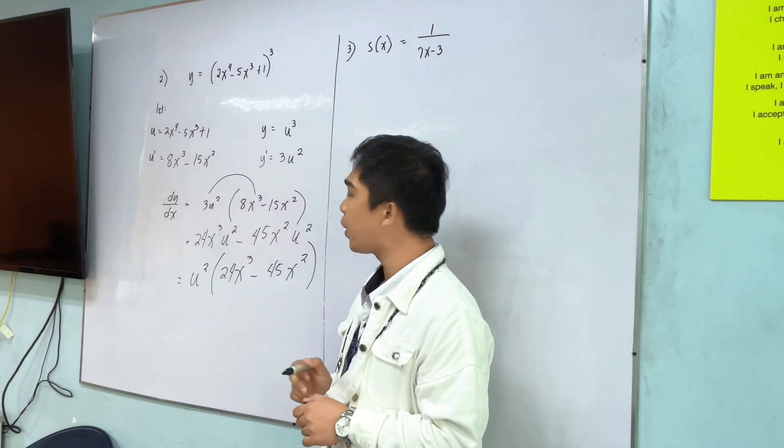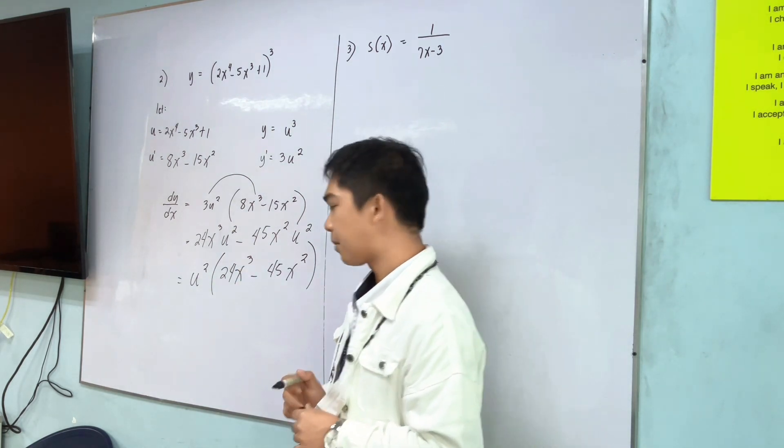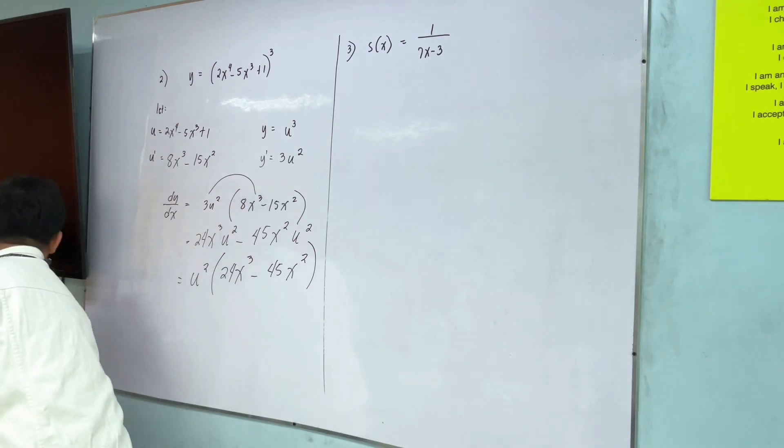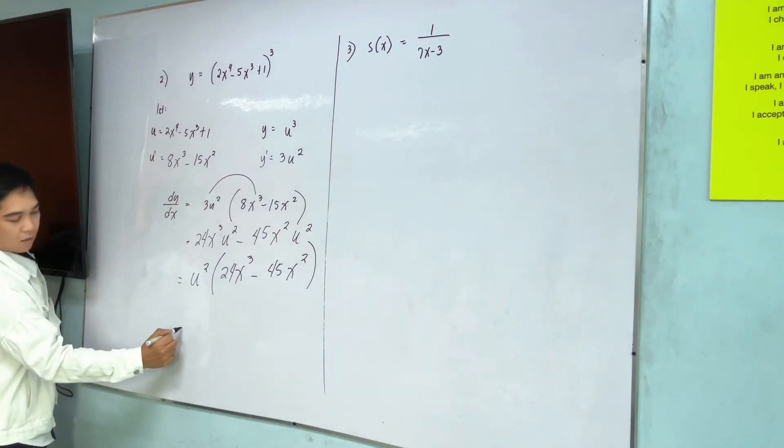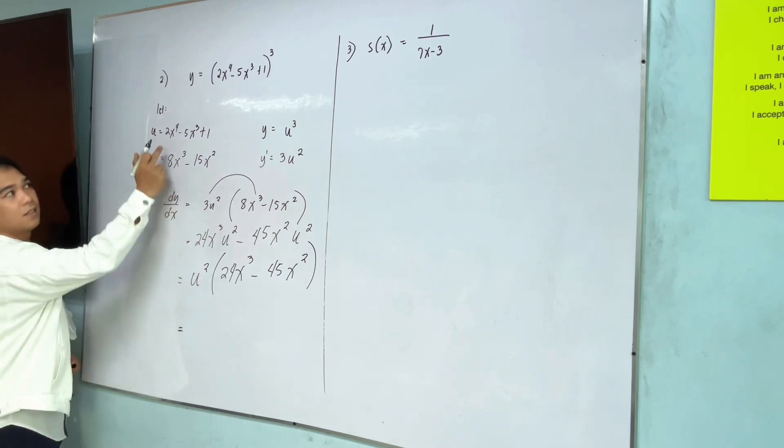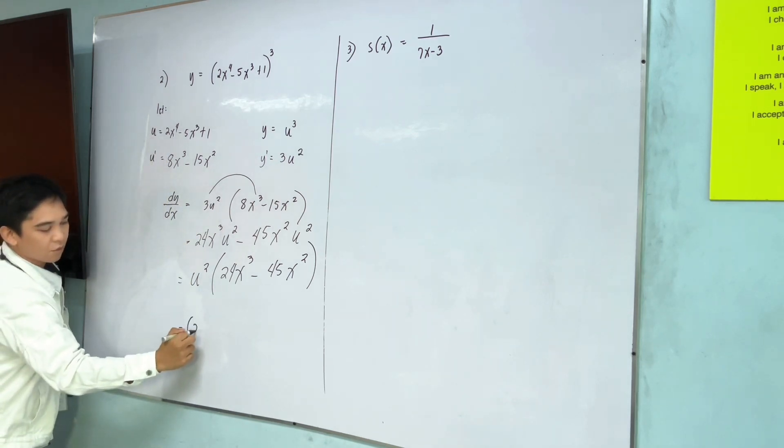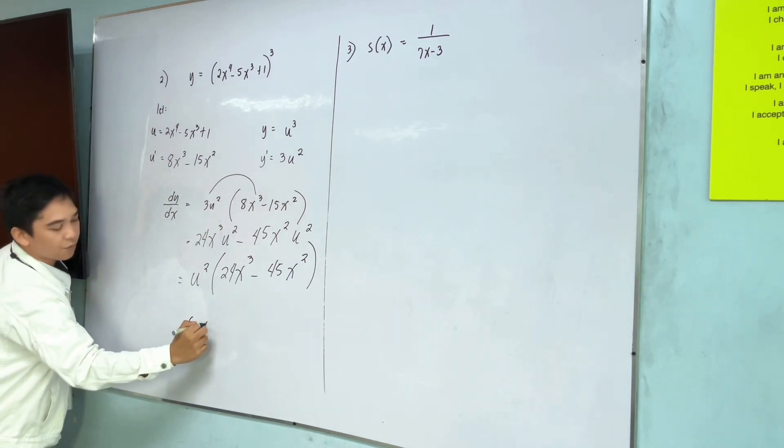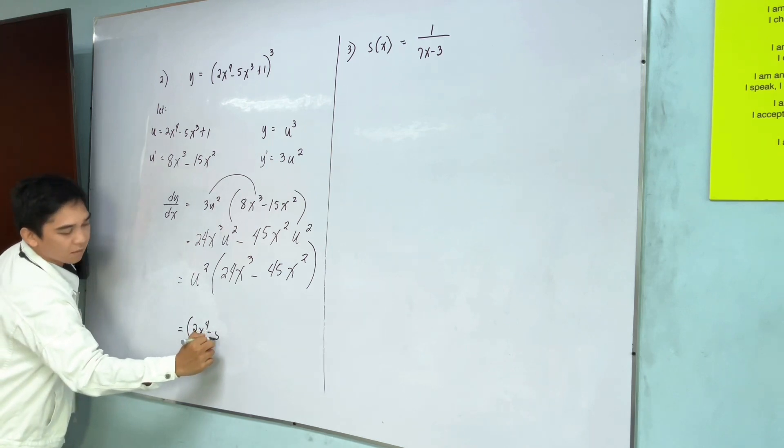Then, dito na tayo pwedeng mag-substitute. Ang u daw natin ay 2x to 4. So, 2x raised to 4 minus 5x cubed.